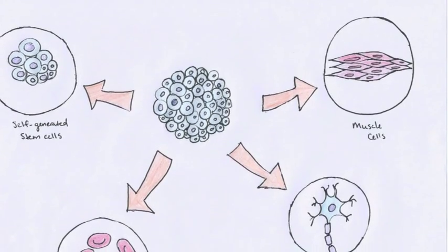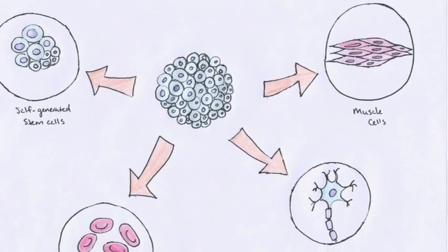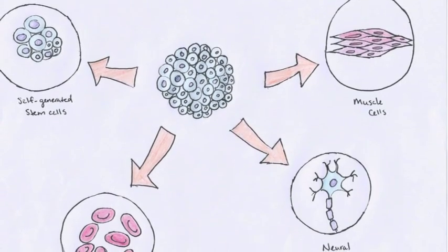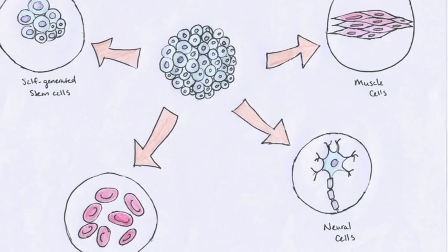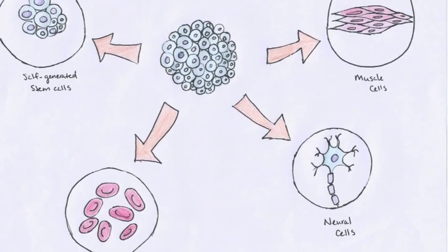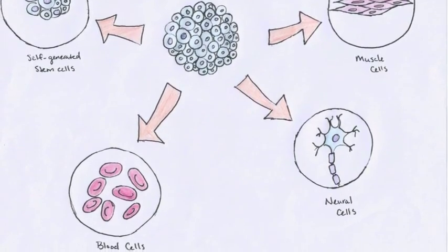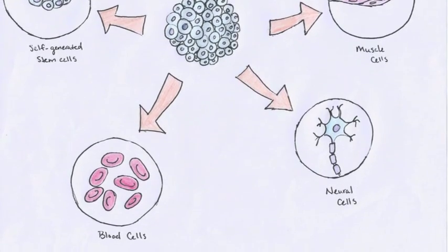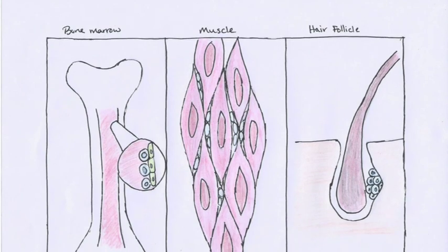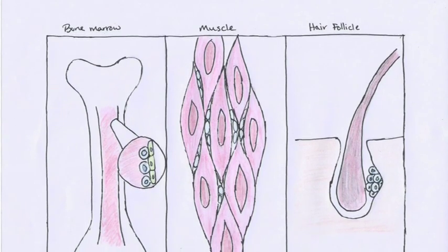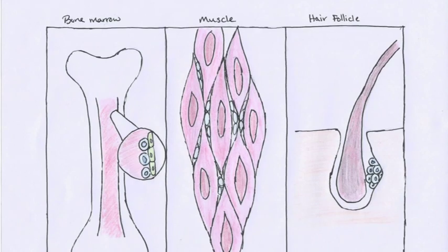Stem cells are undifferentiated cells in the body that have the potential to give rise to one or many different types of more specialized cells. Stem cells are capable of self-renewal and they are crucial elements of the body's development and regeneration process. Stem cells reside in specialized microenvironments that can be found in various locations throughout the body, depending on which type of specialized cells will arise from them.